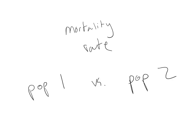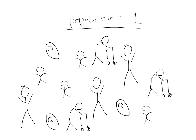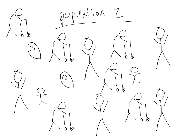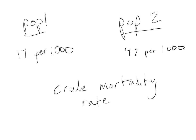Say we wanted to compare the mortality of two populations. Our first population is a mix of people of different ages, and so was our second. When we measure the crude mortality rate, we see that 17 out of every 1,000 people from population 1 died and 47 out of every 1,000 people in population 2 died. Based on this crude mortality rate, we might say that people in population 2 are dying at a greater rate than people in population 1.